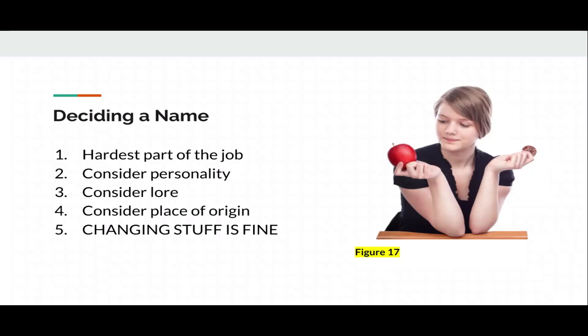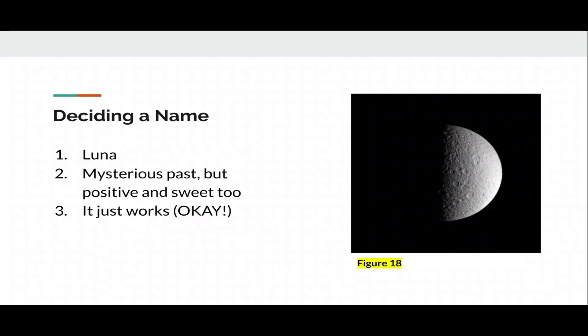This is the pain. This is the not so fun part. Deciding a name. Easily the hardest part of the job. I hate this man. Names are hard. Like fam, you got to consider so many things. Personality, lore, place of origin. And yes, I want to know, when it comes to your writing, changing stuff is fine. I do it all the time. But this is the hardest part fam. Especially when you realize parents do this to their kids, even though you don't even know what they're going to turn out to be like. You could name a kid something very innocent, they turn out to be like a serial killer. Stuff's very hard. I might choose Luna. Because of her lore. She has a mysterious past but also positive and sweet too. And for me it just works. You know how it is with memes and stuff. It just works. If it just works, it just works. You can always change it later. And hey I might change it later. Ask me in a year. It might be something different.